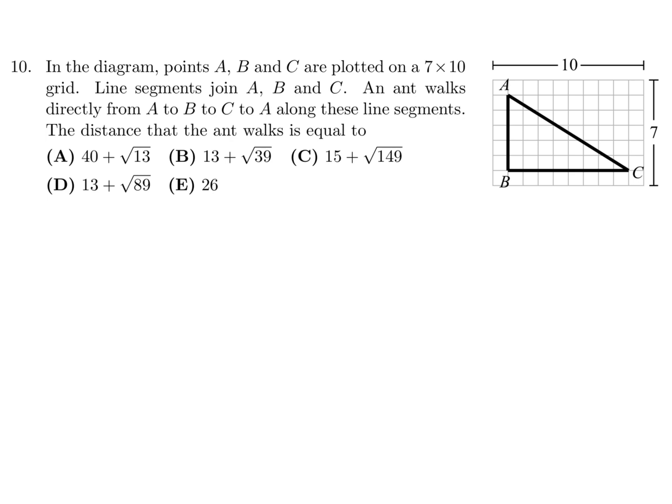In the diagram, points A, B, and C are plotted on a 7 by 10 grid. Line segments join A, B, and C. An ant walks directly from A to B to C to A along the line segments. The distance the ant walks... Well some of these we can just count. 1, 2, 3, 4, 5, so that's 5. It's pretty easy. Then 1, 2, 3, 4, 5, 6, 7, 8, so that's 8. Then we just have to figure out from C to A.